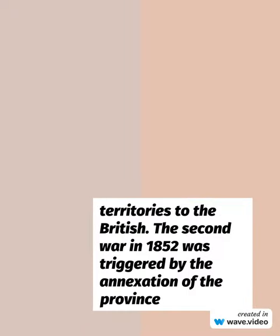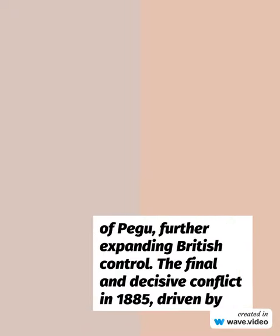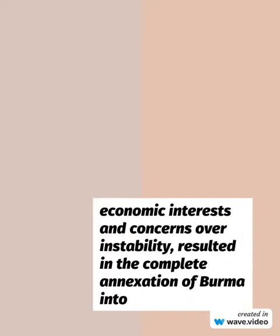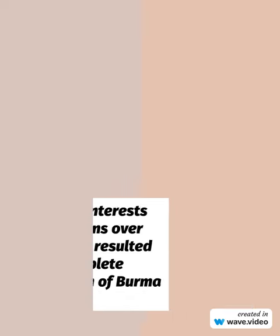The Second War in 1852 was triggered by the annexation of the province of Pegu, further expanding British control. The final and decisive conflict in 1885, driven by economic interests and concerns over instability, resulted in the complete annexation of Burma into the British Empire.